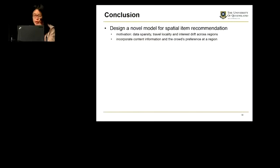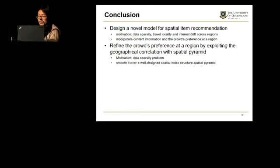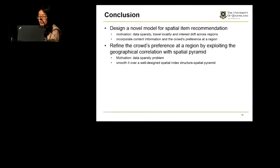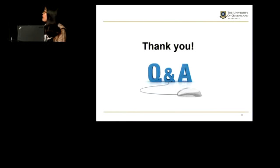In summary, we designed a novel model for spatial item recommendation motivated by the three challenges. We refined the cross-preference in each region by exploring the geographical correlation with the spatial pyramid. We conducted extensive experiments to evaluate both the performance of the model and the impact of different factors. Thank you.